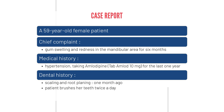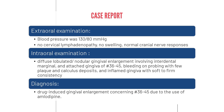A 59-year-old female patient was referred to the periodontology department of Hasanuddin University Dental Hospital with a chief complaint of gum swelling and redness in the mandibular area starting 26 months ago. Medical history revealed that the patient was diagnosed with hypertension and was prescribed amlodipine 10 mg for the last one year. The last scaling and root planing was performed one month ago and the patient brushes her teeth twice a day. Blood pressure was 130/80, with no cervical lymphadenopathy and normal cranial nerve responses. Intraoral examination shows diffuse lobulated nodular gingival enlargement involving interdental, marginal, and attached gingiva from teeth 36 to 45, with bleeding on probing, plaque and calculus deposits, and soft to firm consistency.